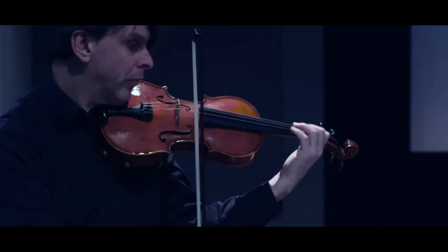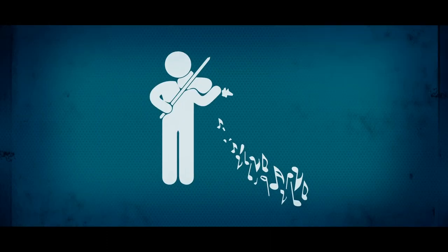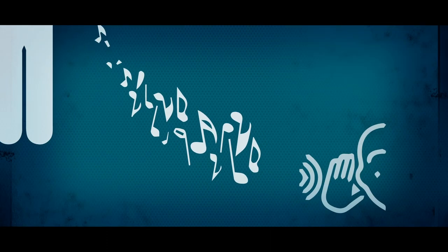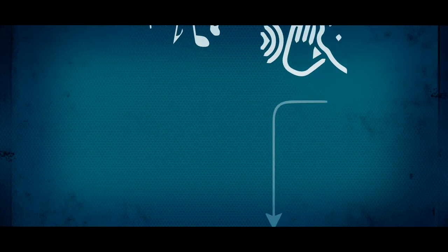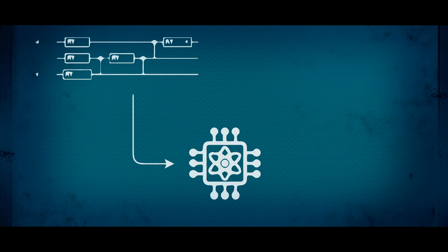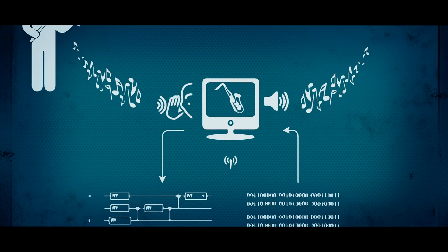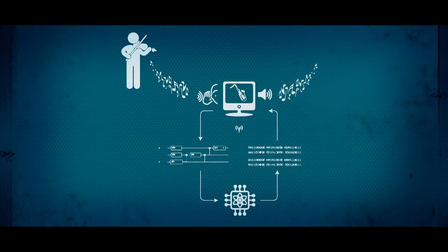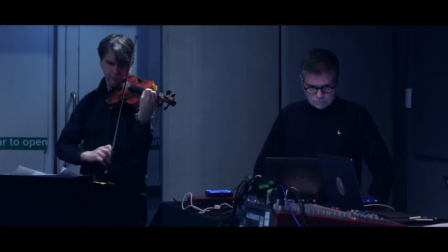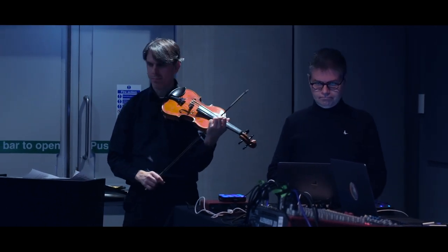The particular computer I'm using for the performance tonight is provided by IBM Quantum, and those machines are based in New York. When Craig plays the violin, the computer is listening. We represent that as quantum states. The machine evaluates those states and gives responses back, which is converted back to music. And all of this happens in real time. This is fundamentally different from the methods that artificial intelligence uses in classical machines.